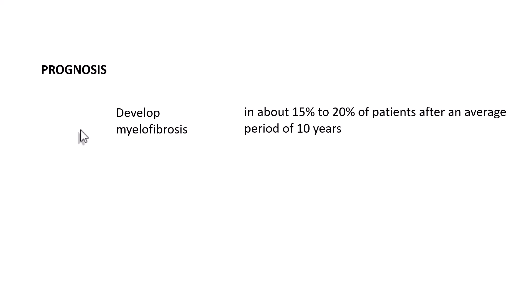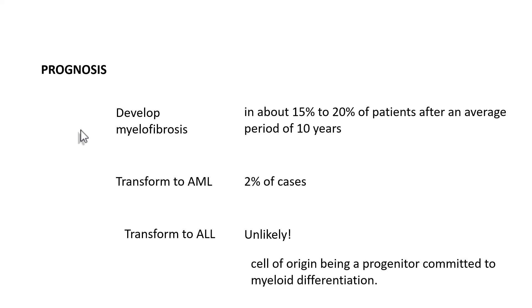Regarding prognosis: around 15-20% of patients develop myelofibrosis after an average of 10 years from diagnosis. In around 2% of cases, it can transform into acute myeloid leukemia — notably myeloid, not lymphoid leukemia. In contrast to CML, which can progress to either acute myeloid or lymphoid leukemia, transformation to acute lymphoblastic leukemia is extremely unlikely in polycythemia vera. This indicates that the cell of origin is a progenitor committed to myeloid differentiation.